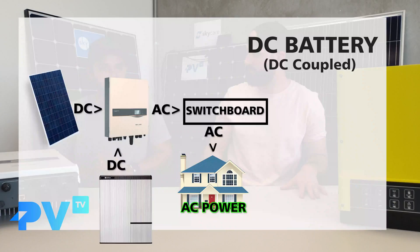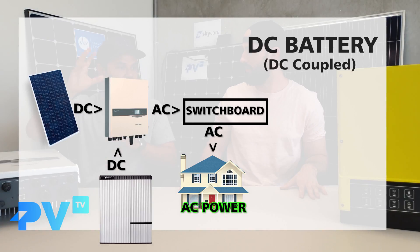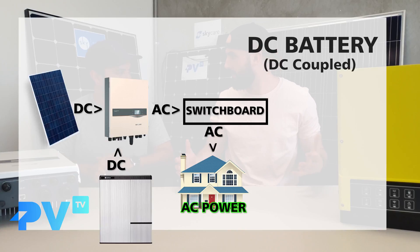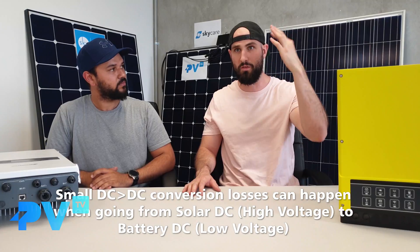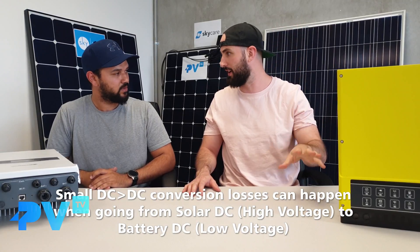A DC battery can actually connect to the panels as well — directly to the panels. DC battery, DC panels: it doesn't need to convert to AC first. It stores the sun's power directly. So a DC battery takes power directly from your solar panels and stores it as DC power, with no conversion or power losses.